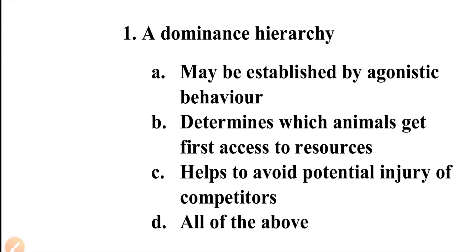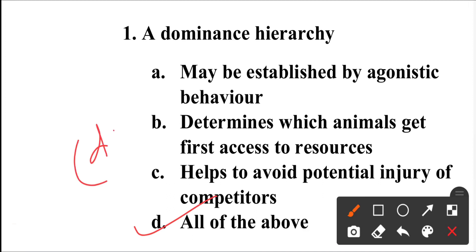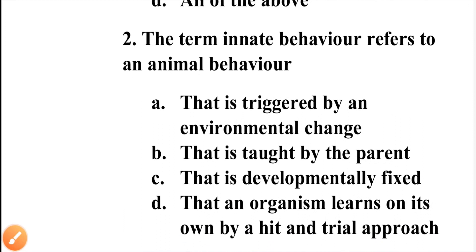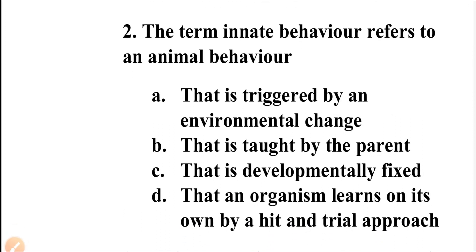Dominance hierarchy is generally seen in baboons, wolves, some birds, and similar animals. It can be established by agonistic behavior — that is, fighting behavior. It also determines which animal gets first access to resources and helps to avoid potential injury of competitors. As a result of this dominance hierarchy, various groups of animals live together. So the answer is all of the above — option D is correct.